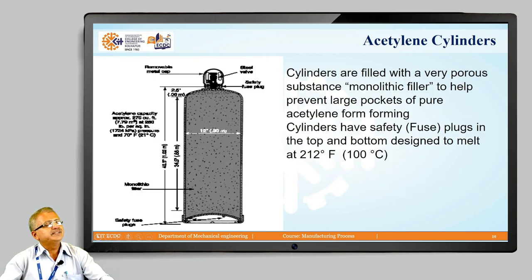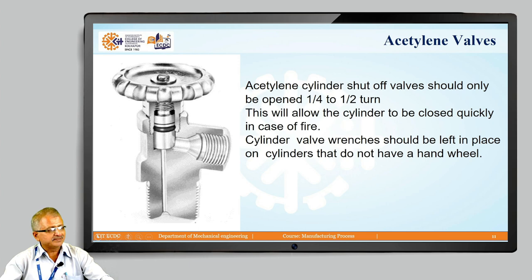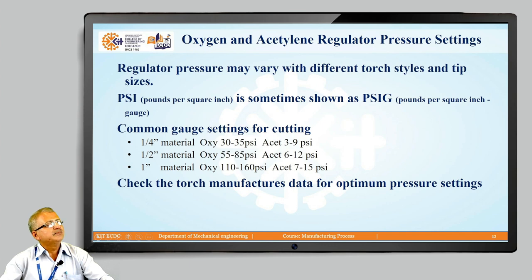Acetylene cylinders are filled with a porous monolithic filler substance to prevent large pockets of pure acetylene from firing. Safety plugs or fuse plugs are located at the top and bottom, designed to melt at 212 degrees Fahrenheit (100 degrees centigrade). Acetylene valves allow quick closure in case of fire, and special wrenches are required to operate them — these are foolproof safety features for safe use of the gas.